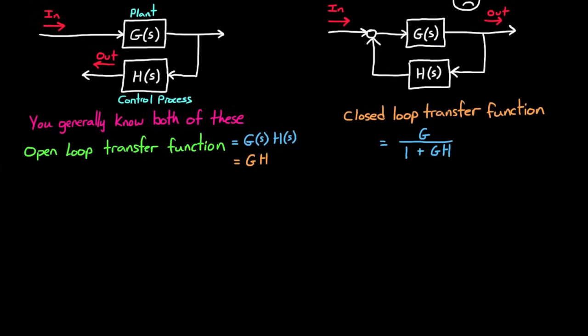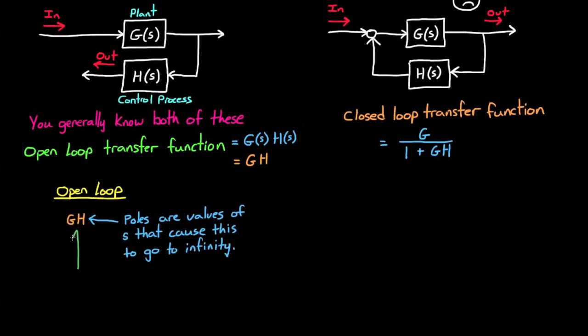So you can determine if your open-loop system is stable by finding the poles of G times H. The poles are values of S that cause you to divide by 0 in the transfer function, and so the result blows up to infinity. If there's a pole in the right half plane, then the open-loop transfer function is unstable.